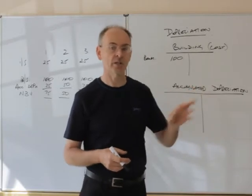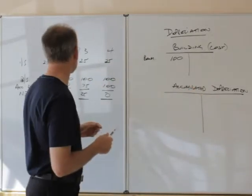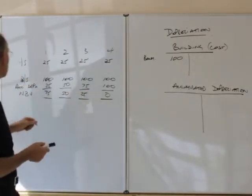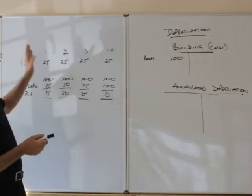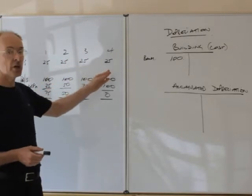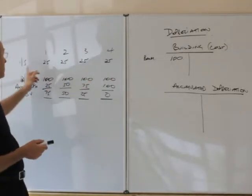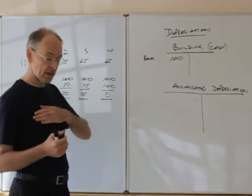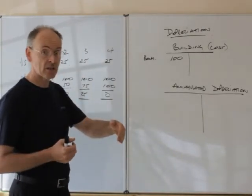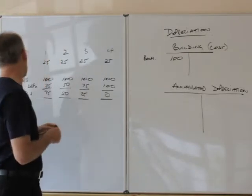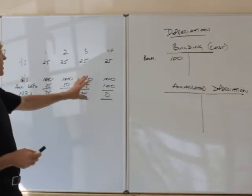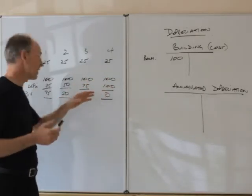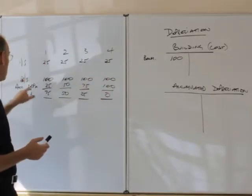And we'll come to revaluations in a minute. So here's the chart then. As you can see from the chart, each year we've got the same depreciation charge to the income statement, because one method is to have a straight line, the same expense each year. And the balance sheet entries will always show first of all what the original cost was or revalued amount—here the original cost.